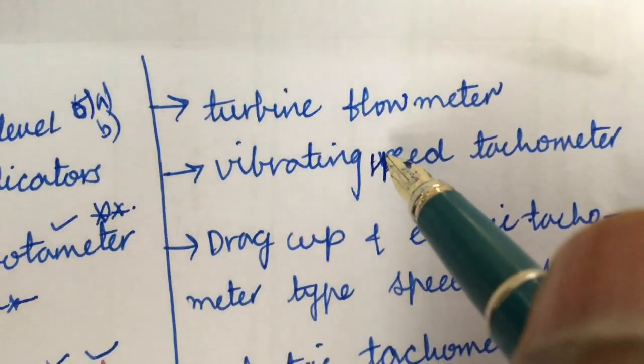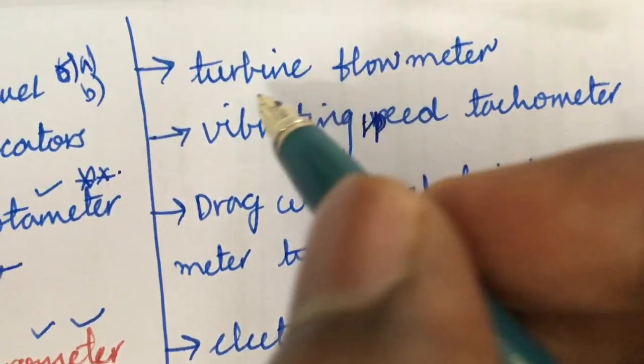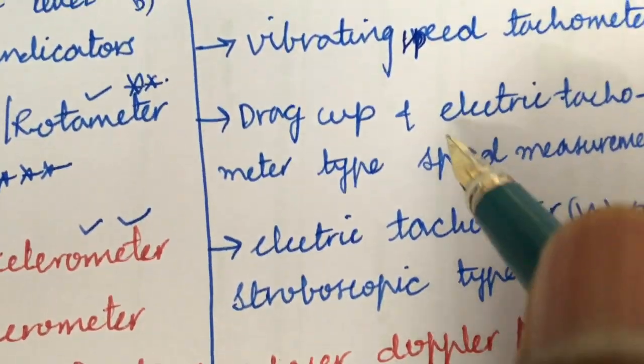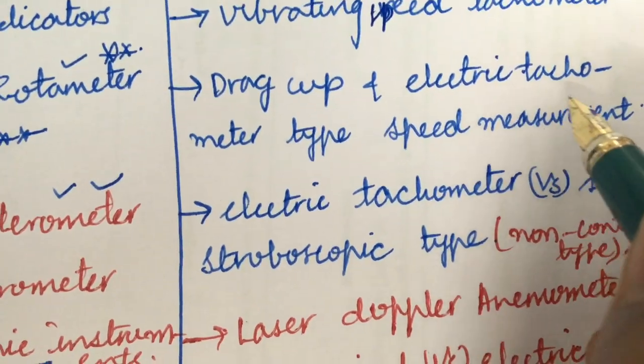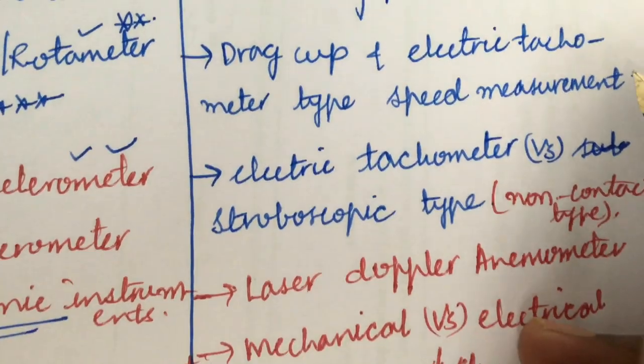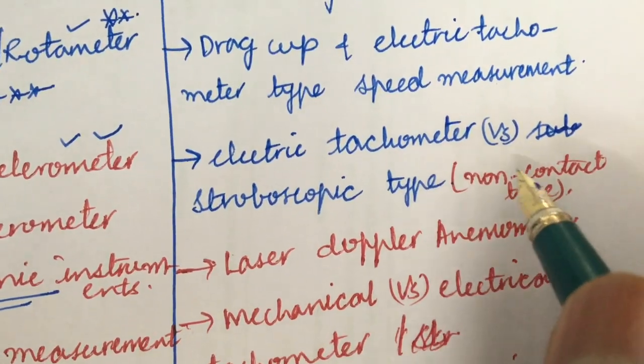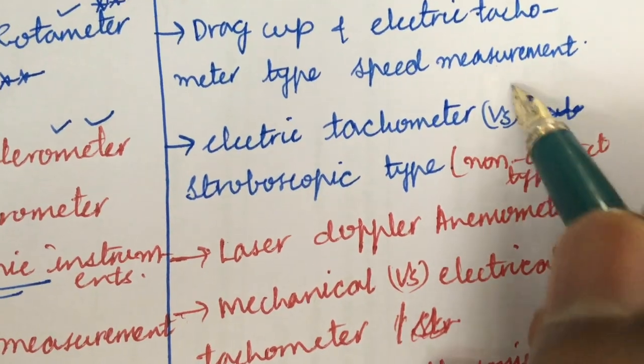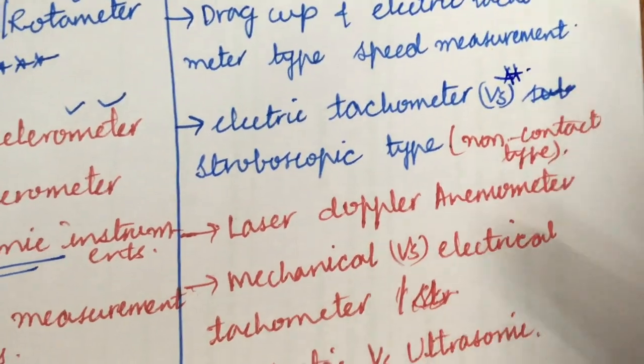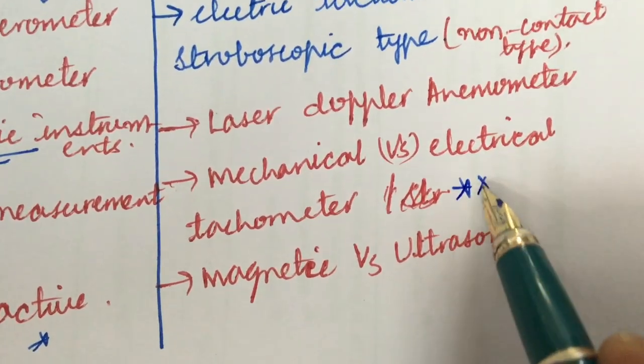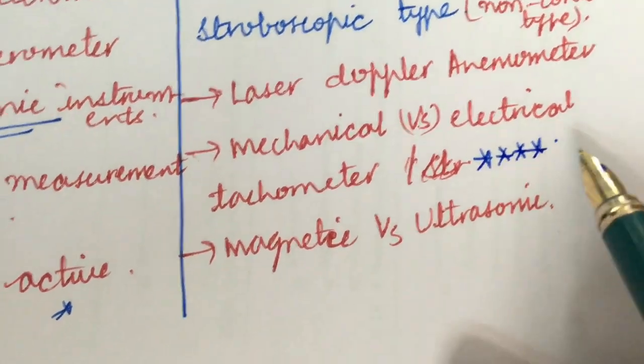Dear students, you are supposed to work out each and every answer only in point-wise and do not write paragraph-wise. Turbine flow meter, vibrating speed tachometer, drag cup and electric tachometer type speed measurement, electric tachometer versus stroboscopic type, that is nothing but the non-contact type, may be one of the very important questions. And laser Doppler anemometer, mechanical versus electrical tachometer their differences.